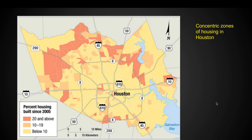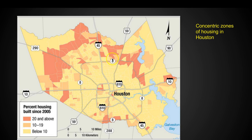Looking at the concentric zone of housing in Houston, we're examining rings. In the inner ring, housing is mostly very old — below 10% of houses were built since 2005. As we move out, we start to see more recent construction, shown in red. It's not all the way around, but as we examine the concentric zone, it makes sense that as we move away from the city's origins, people are building in the outer rings because that's the land that's left and more affordable.